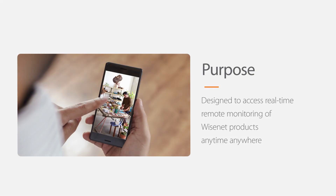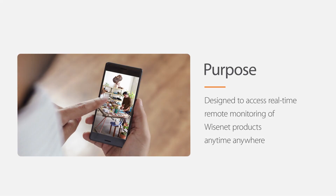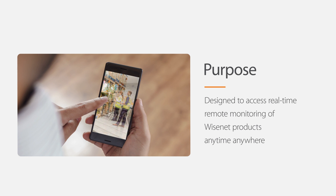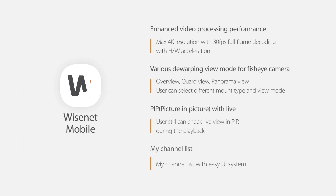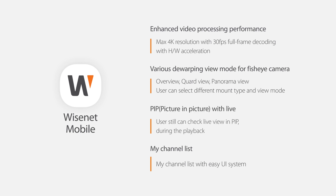The Wisenet mobile application is designed to access real-time monitoring with device management from wherever you are. When you want to see your home or store from outside, simply use your smartphone for remote managing. This application dramatically improves various functions, such as video processing performance, and dewarping view mode, live and picture-in-picture search functions, as compared to the last version.